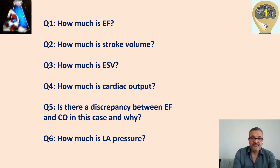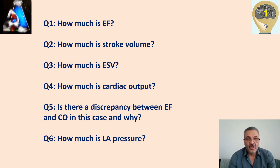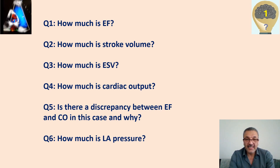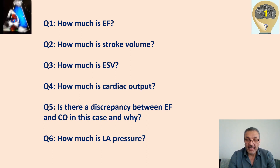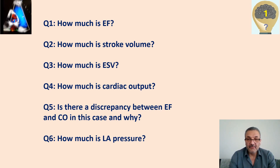Based on those findings, the questions are: How much is the ejection fraction? How much is the stroke volume? How much is the end-systolic volume? How much is the cardiac output? Is there any discrepancy between EF and cardiac output? Based on measurement by stroke volume and by Simpson's definition, is there any discrepancy between them and why? And finally, how much will be left atrial pressure?